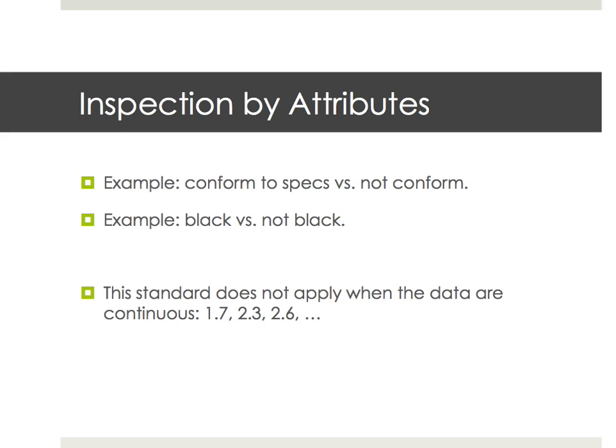What I mean is that it needs to be very clear whether a sample is good or not good — conform to specs or not conform to specs, in this color or not in this color. If you have continuous data like 1.7, 2.3, 2.6 and so on, you need to convert them into some kind of yes-no type of data.